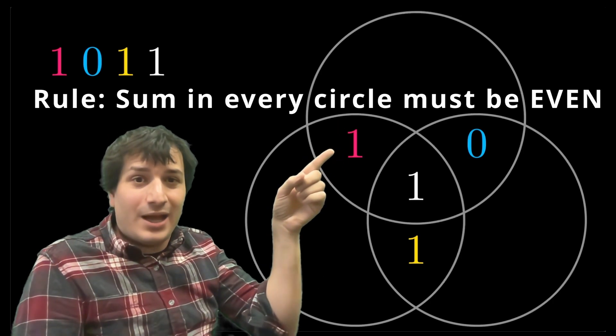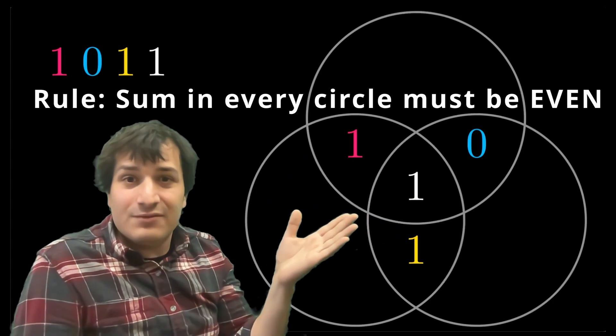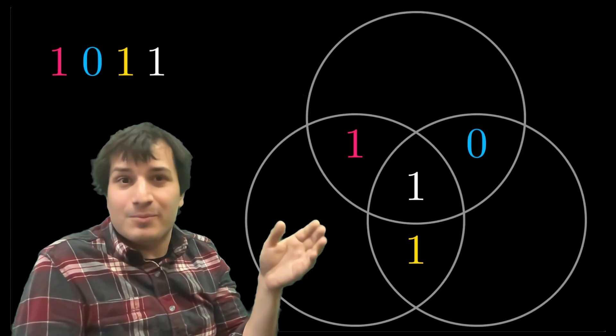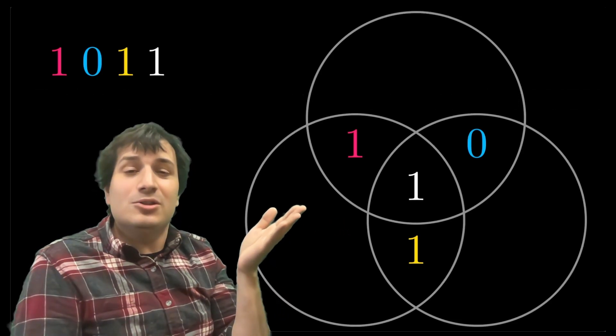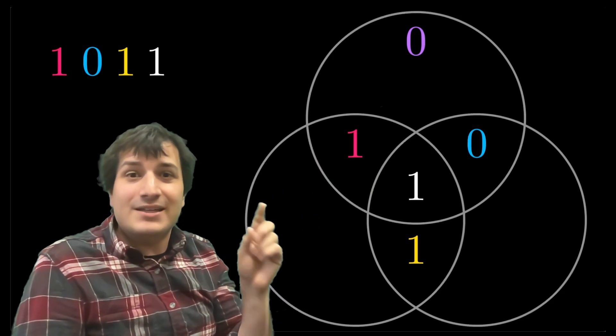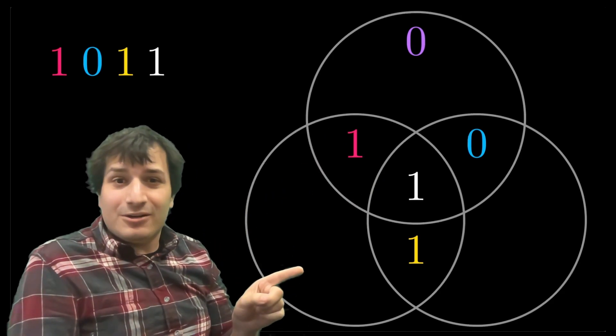So let's look at this top circle. We got one plus one. It's already an even number. So what is the number that's going to go up there? Well, it's going to be zero. That would make the sum even. It would make the sum two. So one plus one plus zero plus zero is two, which is even. What about down here in this circle?